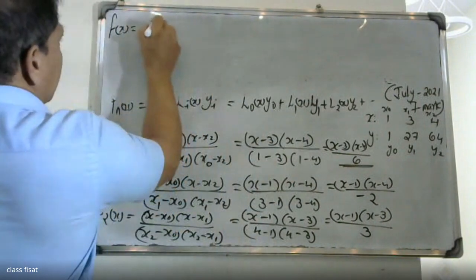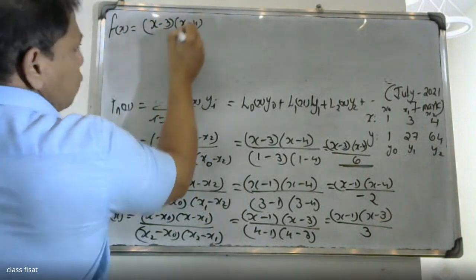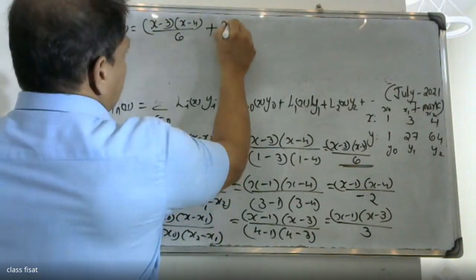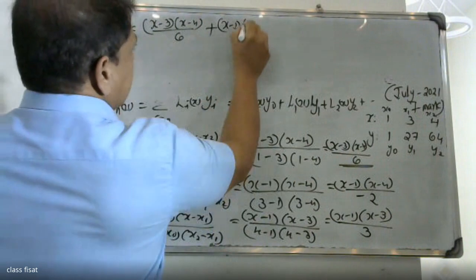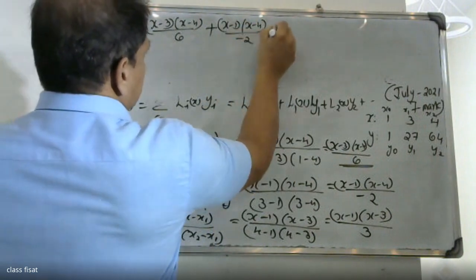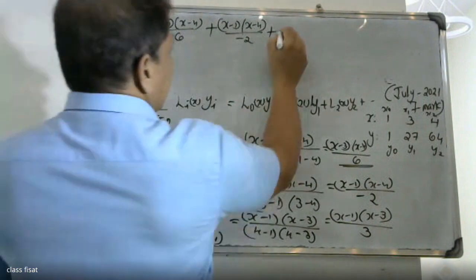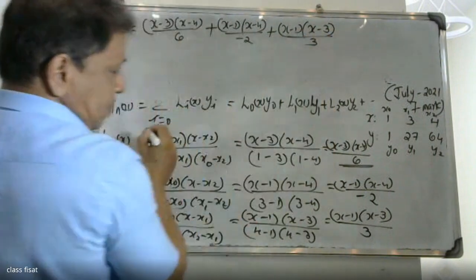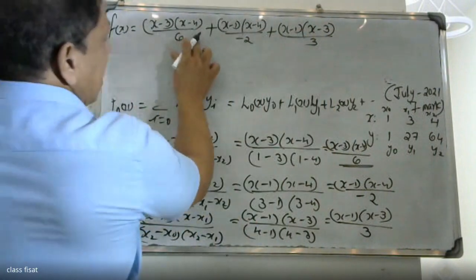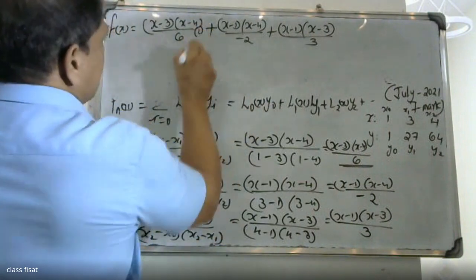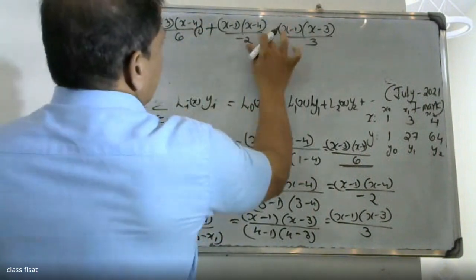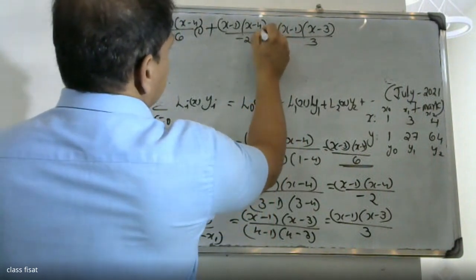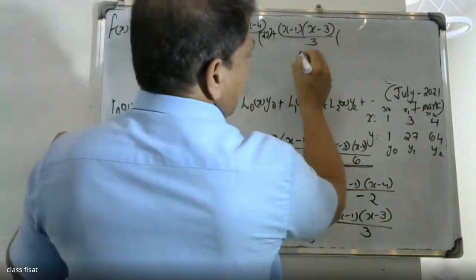Assembling the polynomial: P(x) = (x-3)(x-4)/6 · y0 + (x-1)(x-4)/(-2) · y1 + (x-1)(x-3)/3 · y2, where y0=1, y1=27, and y2=64.